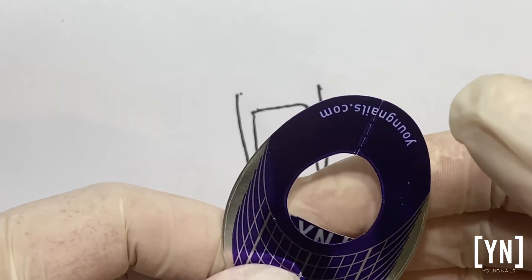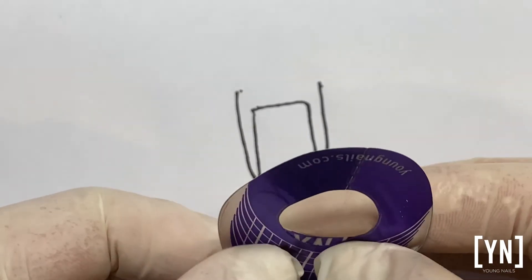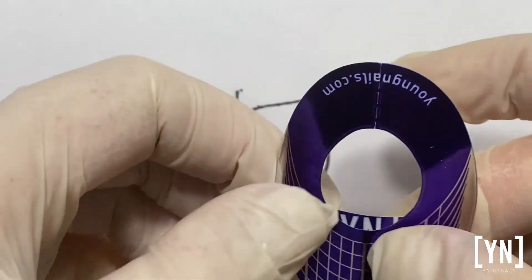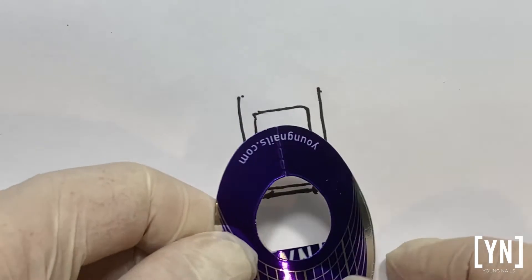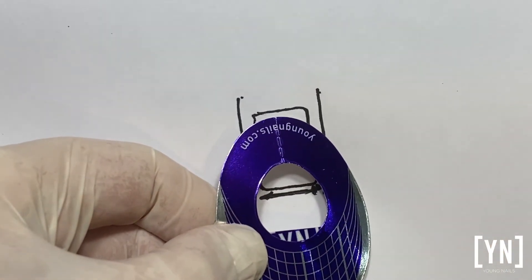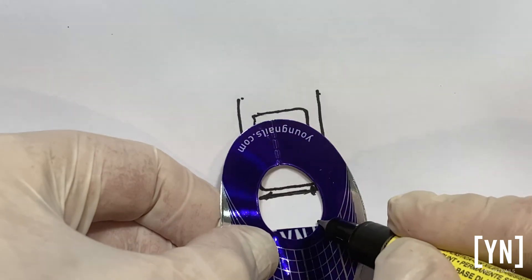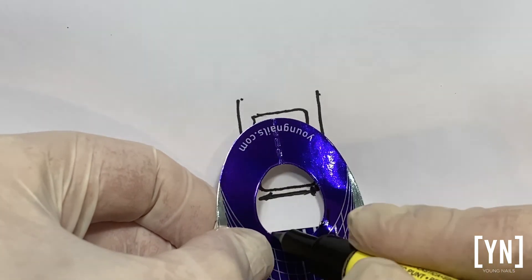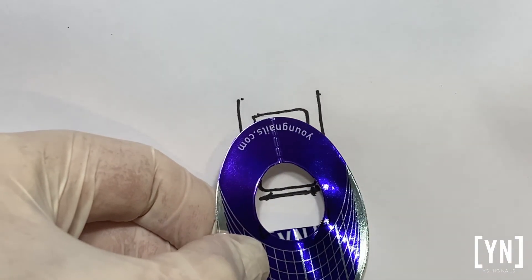That way we can get a straight line in the front. This way we've got it straight and straight. If you need to cut out the corner, you can also do that for a very wide nail, but only do that in case of a very wide nail.